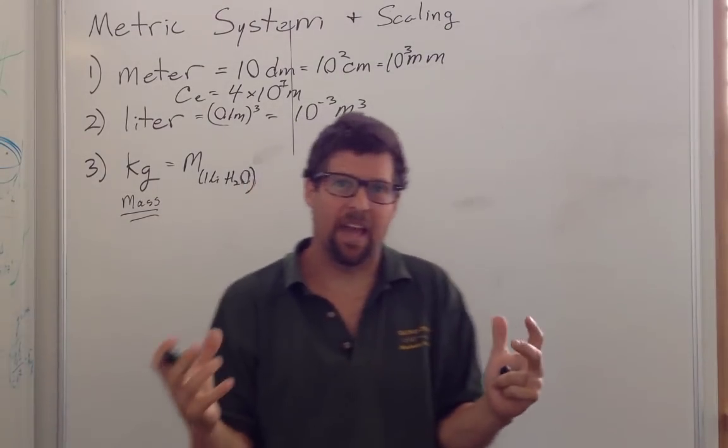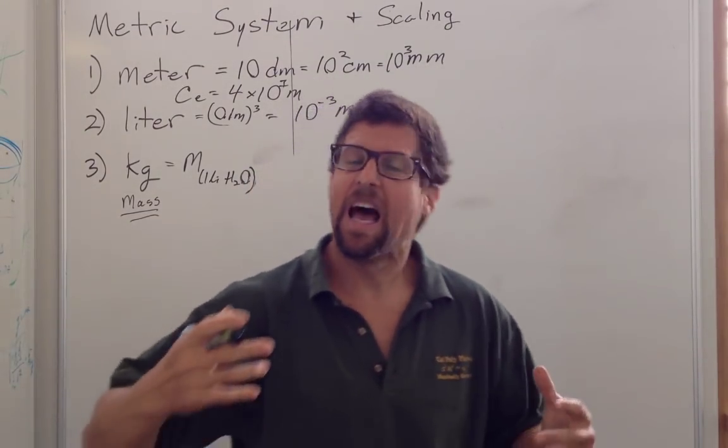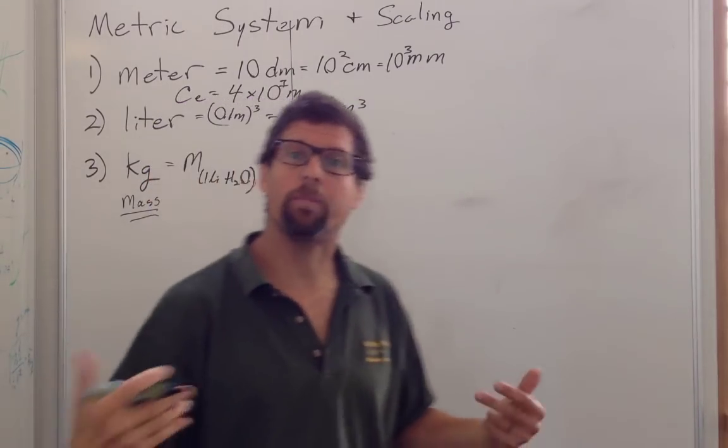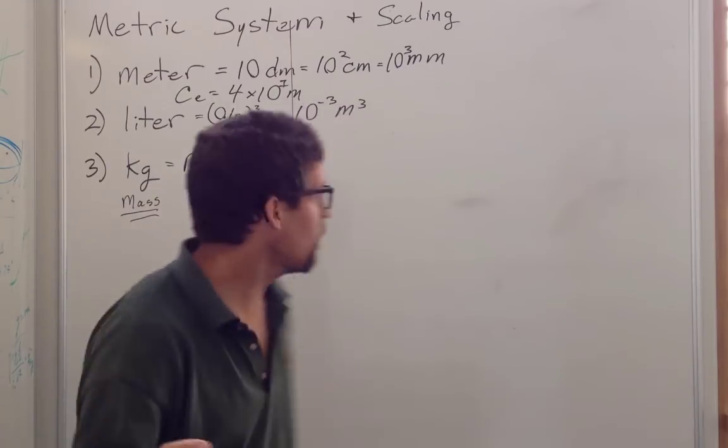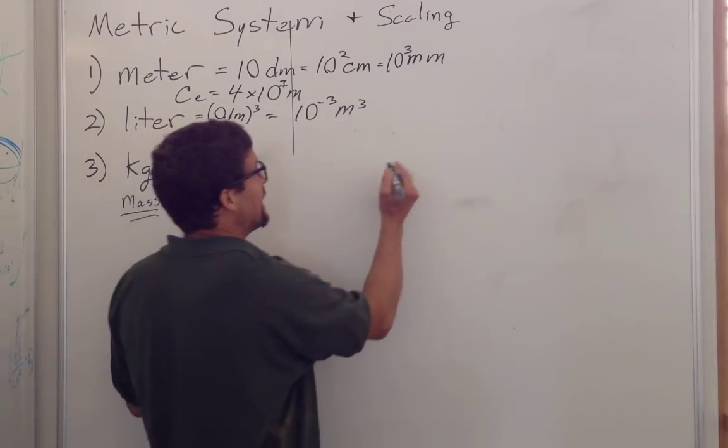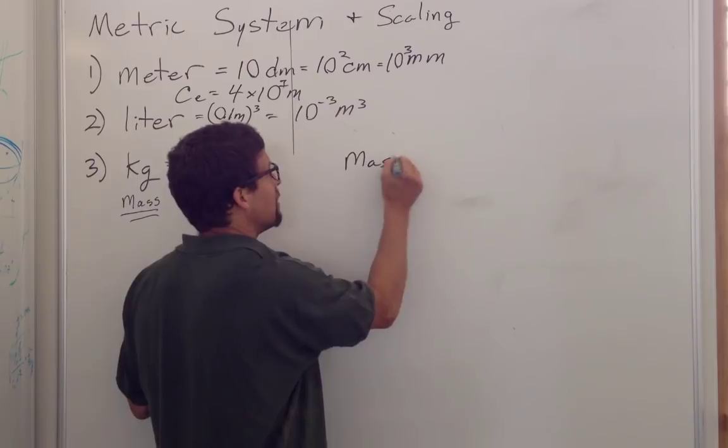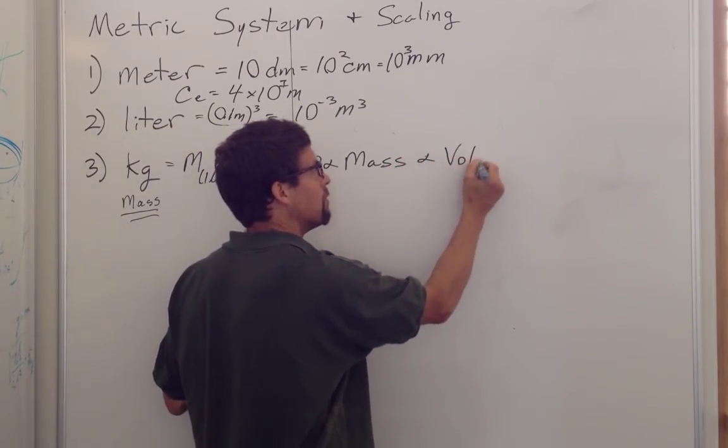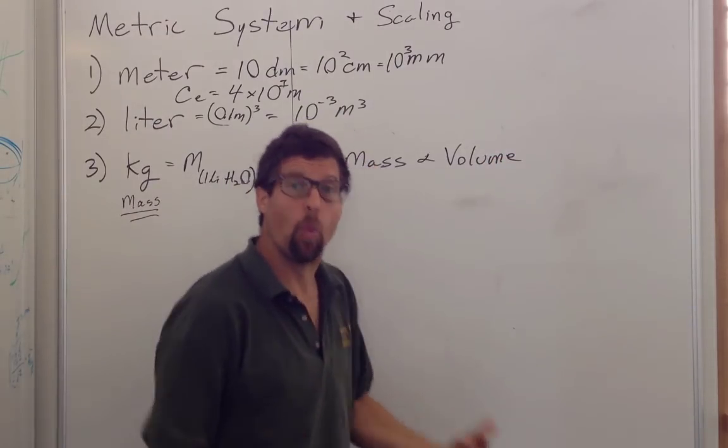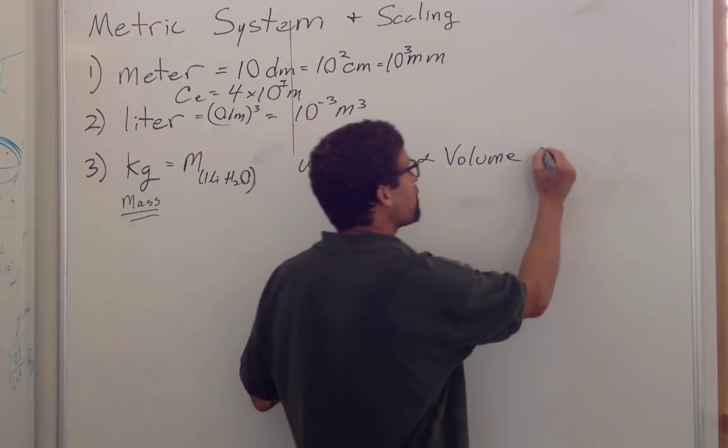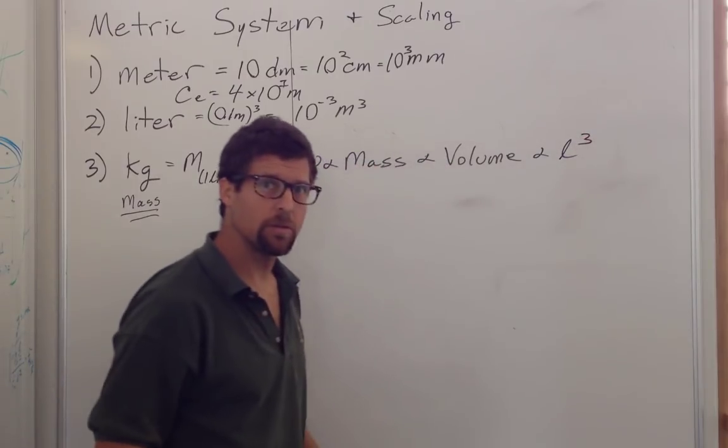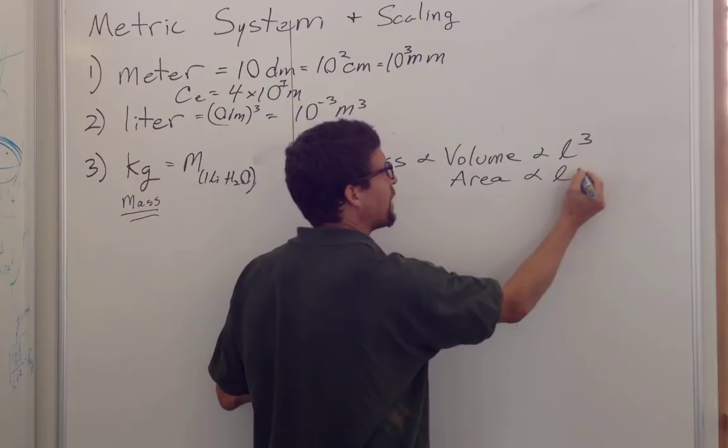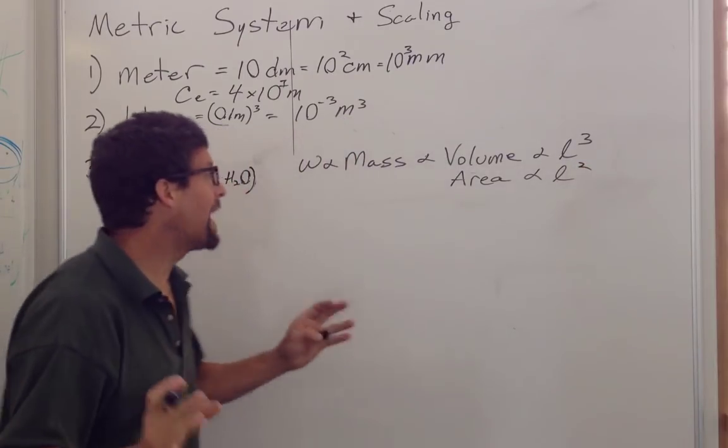So this scaling has profound effects on how biological systems can survive, and why we're built the way we are. What we see is that mass, and therefore your weight, mass is proportional to volume, how much substance you have, how much water we have, and that's proportional to length cubed. But your surface area is proportional to length squared. Why is this important?